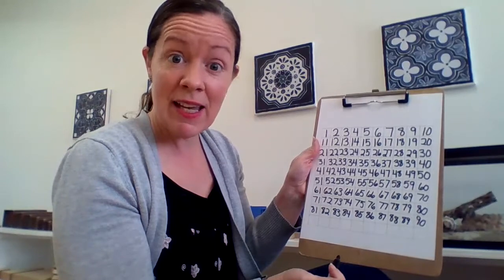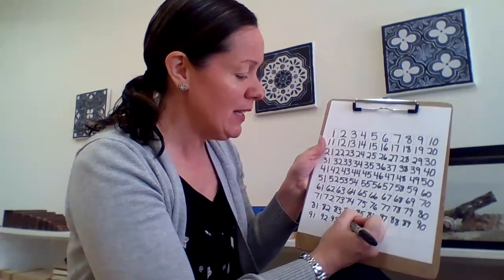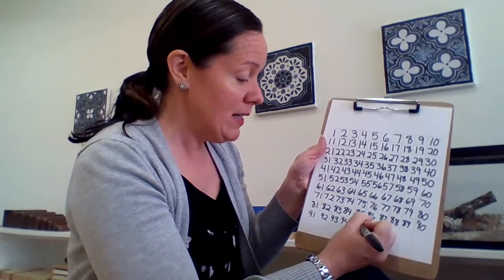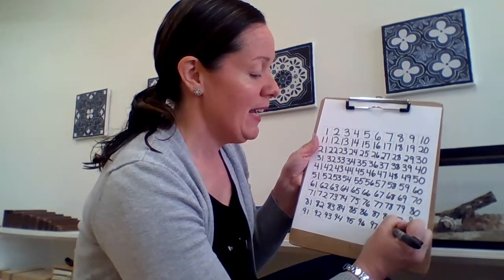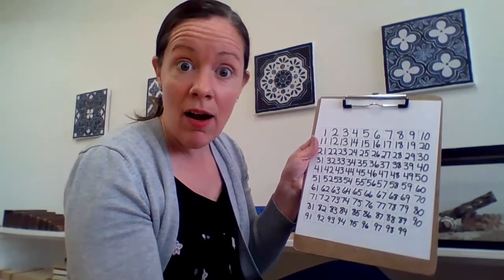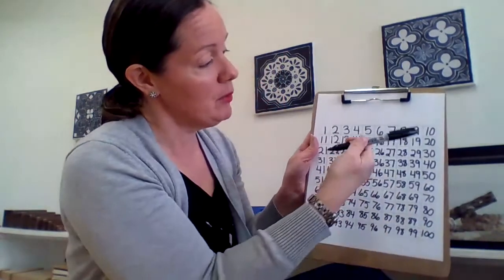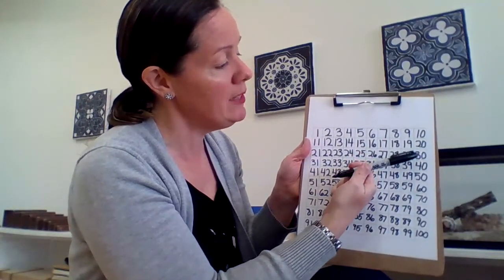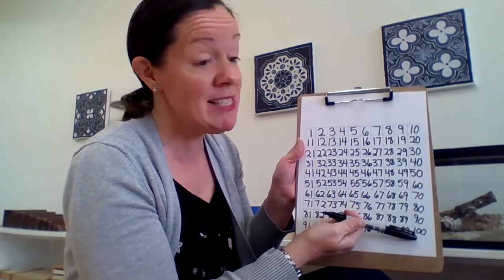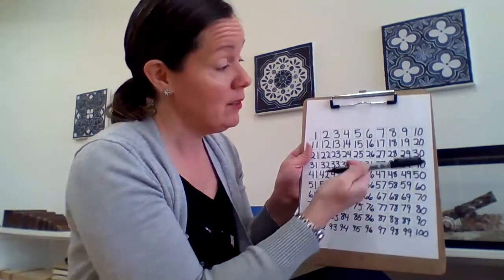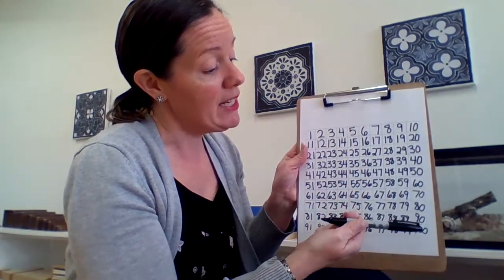What comes next? 91, 92, 93, 94, 95, 96, 97, 98, 99. 100! We made it! So it's a one, a zero, and a zero. So let's just count the tens. One ten, two tens, three tens, four tens, five tens, six tens, seven tens, eight tens, nine tens, ten tens. That's one hundred. So ten, twenty, thirty, forty, fifty, sixty, seventy, eighty, ninety, one hundred.